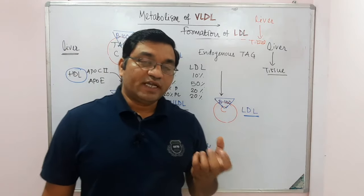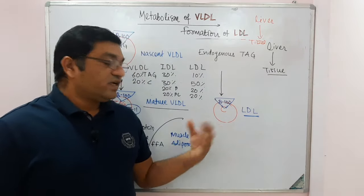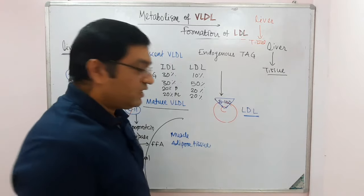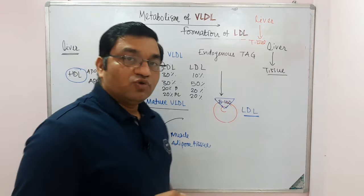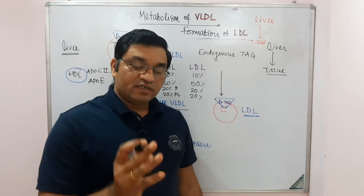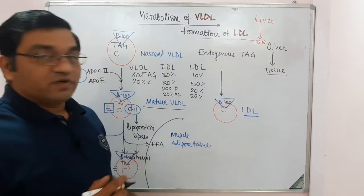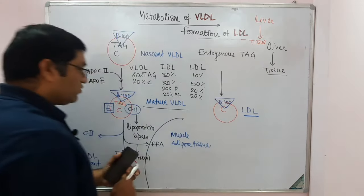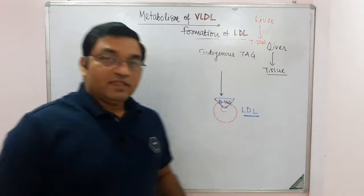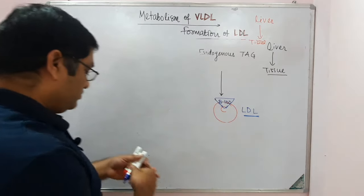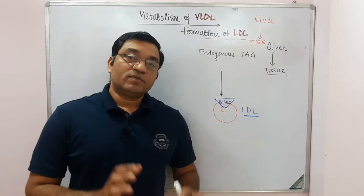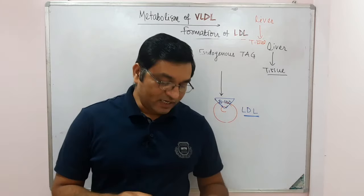LDL is taken up by the peripheral tissues and the liver. It is metabolized mainly in the liver, adipose tissue, and adrenal gland. The uptake of LDL is specifically mediated by a protein known as clathrin, and the process is known as receptor-mediated endocytosis.